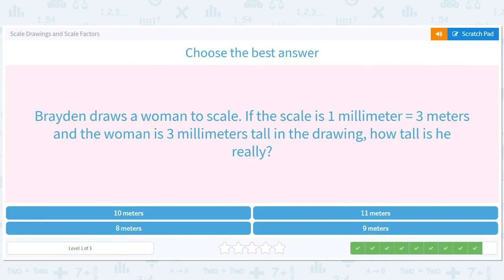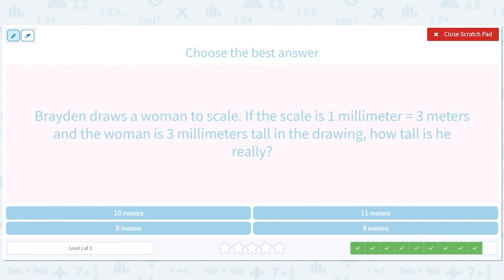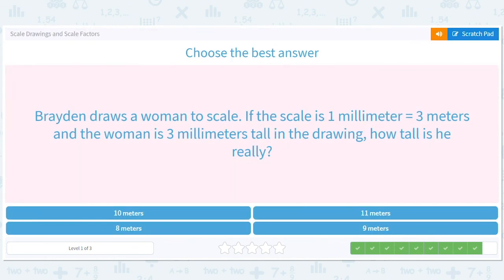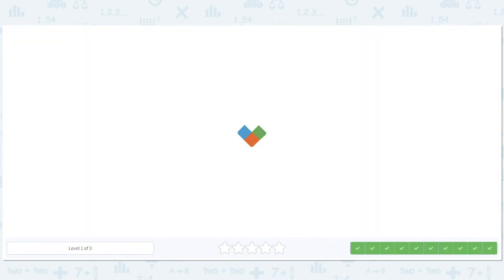Braden draws a woman to scale. If the scale is one millimeter equals three meters, and the woman is three millimeters tall in the drawing. How tall is he really? I think that should be a she, but why nitpick? One millimeter, three meters. If the woman is three millimeters tall in the drawing. So one times three is three. Three times three is nine. How tall is the woman really? She is nine meters tall, really.